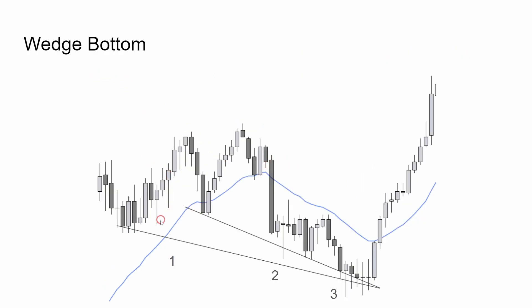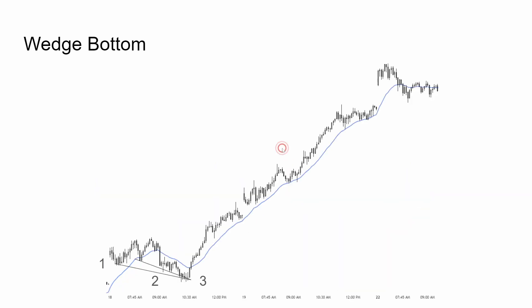Here's a wedge bottom. There are multiple ways to count this — push one, pull back, push two, pull back, push three. Or push one, pull back, push two, and push three. There's also a micro wedge bottom right here — push one, pull back, push two, pull back, push three. To show you the strength of this pattern: when the bears fail three times, it broke out for several days. A really strong bull trend for about two and a half days off that wedge bottom. That won't happen every time, but it was a very notable pattern.